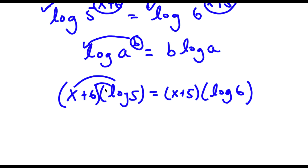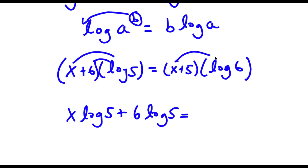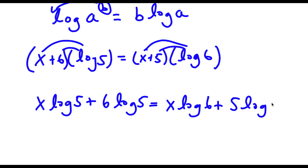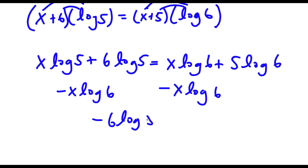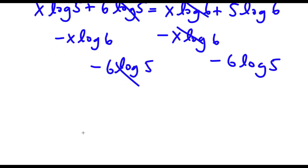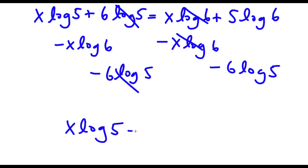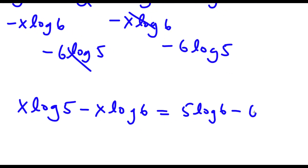Now I can go ahead and distribute. So now I have x times log 5 plus 6 times log 5 is equal to x times log 6 plus 5 times log 6. Now I'm going to move all the terms with x on one side. So I'm going to subtract x times log 6 on both sides, and then subtract 6 times log 5 on both sides. So I'll be left with x times log 5 minus x times log 6 is equal to 5 times log 6 minus 6 times log 5.